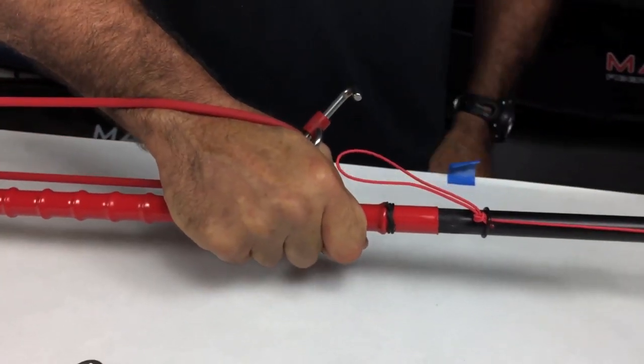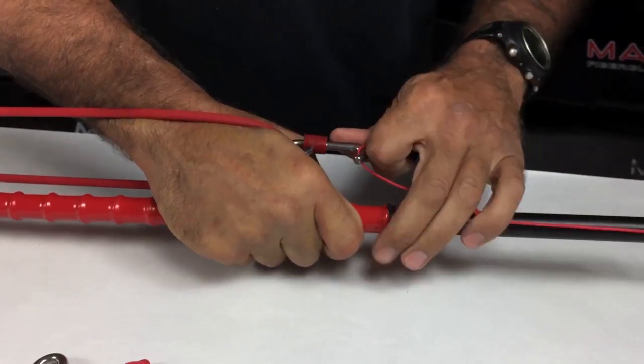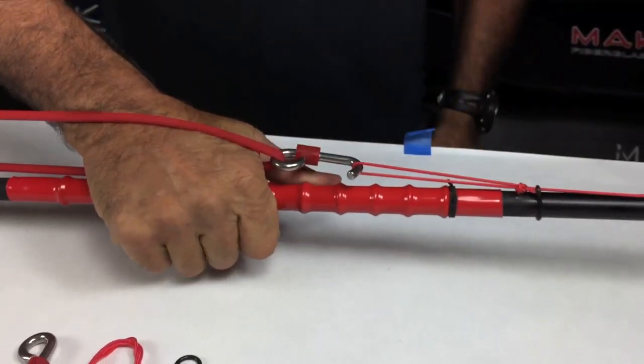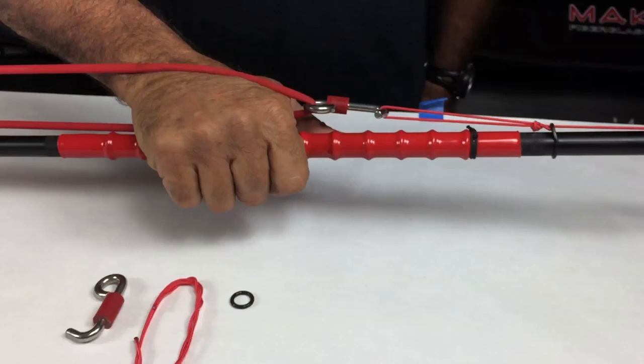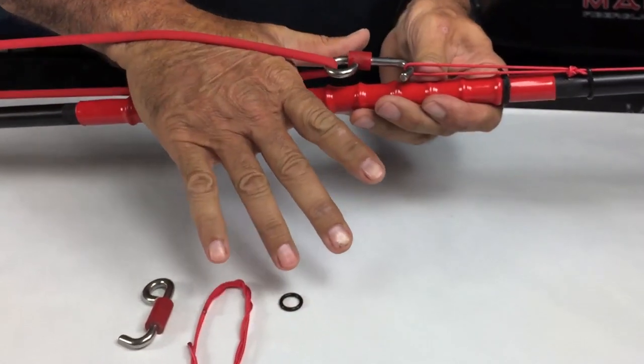The Mako Pole Spear Resting Hook eliminates the pain and hand fatigue by keeping your pole spear band in the loaded position. Watch how easy it is for Dano to load the band and engage the resting hook.